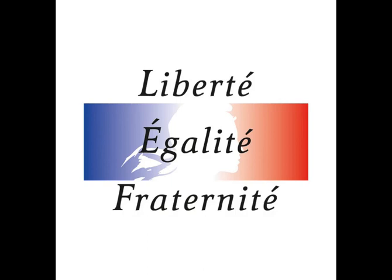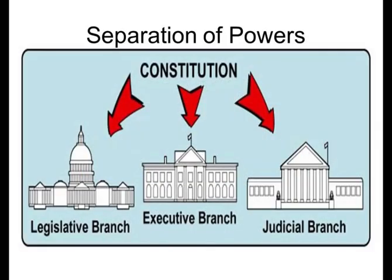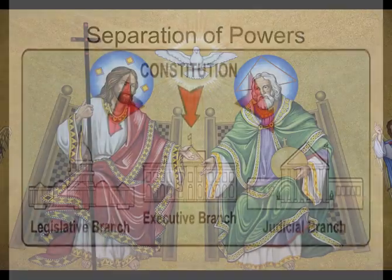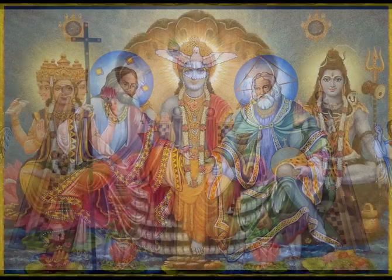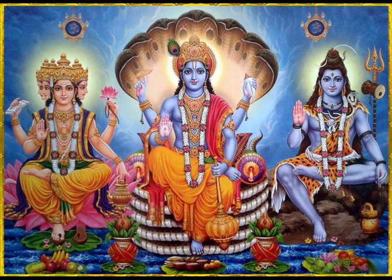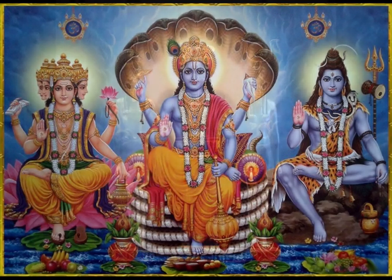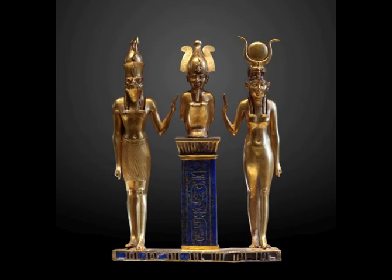For example, the free ideals of the French Revolution. The trias politica. And there are also the religious trinities. Well known, of course, is the father, son, holy spirit trinity. But many religions have a trinity. Such as Vishnu Brahma Shiva and Isis Osiris Horus.